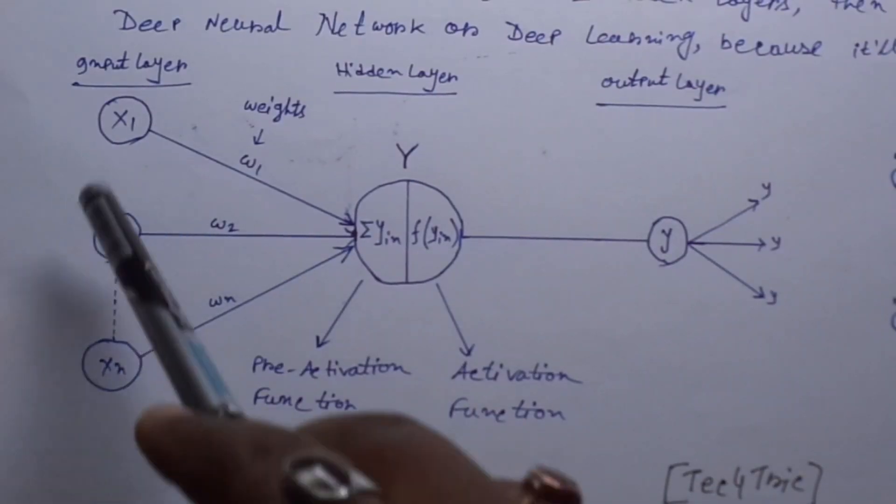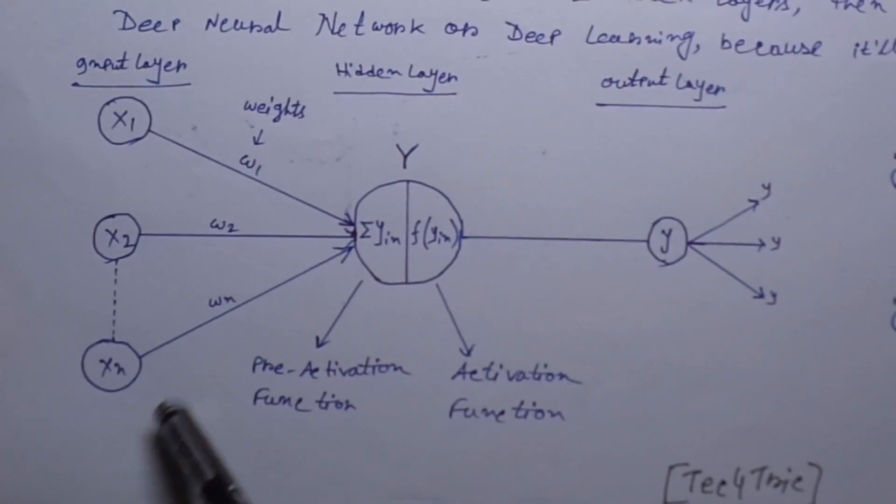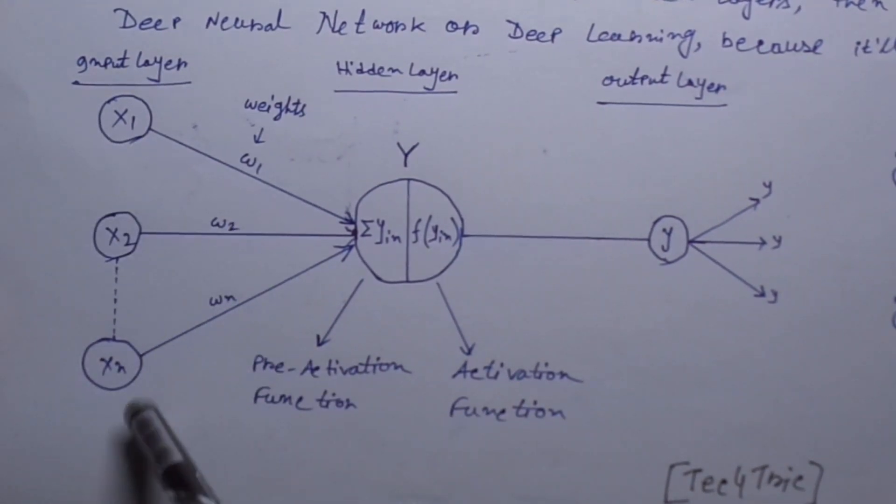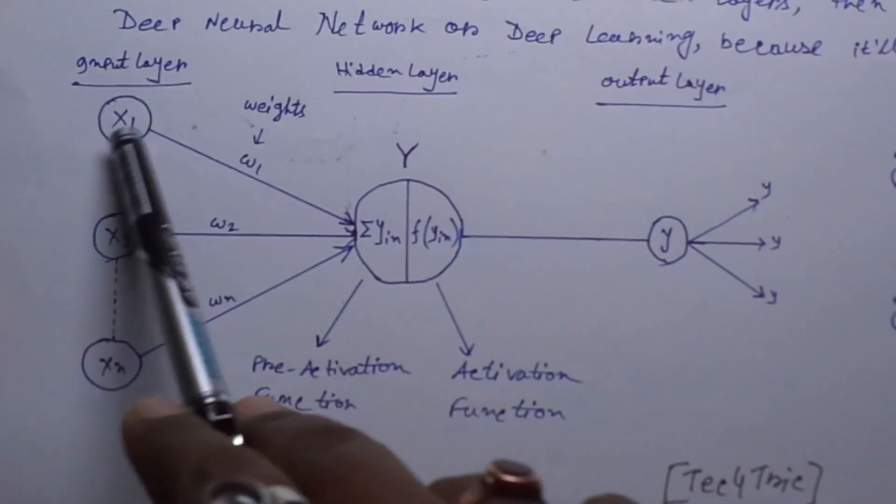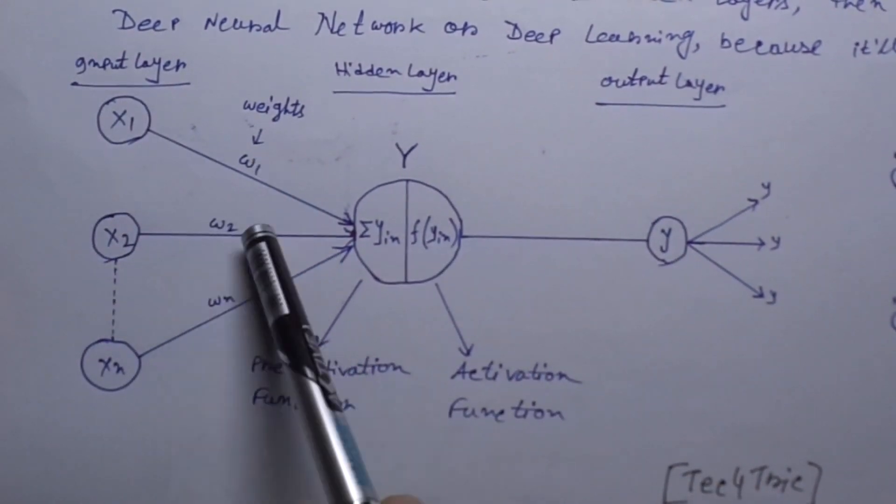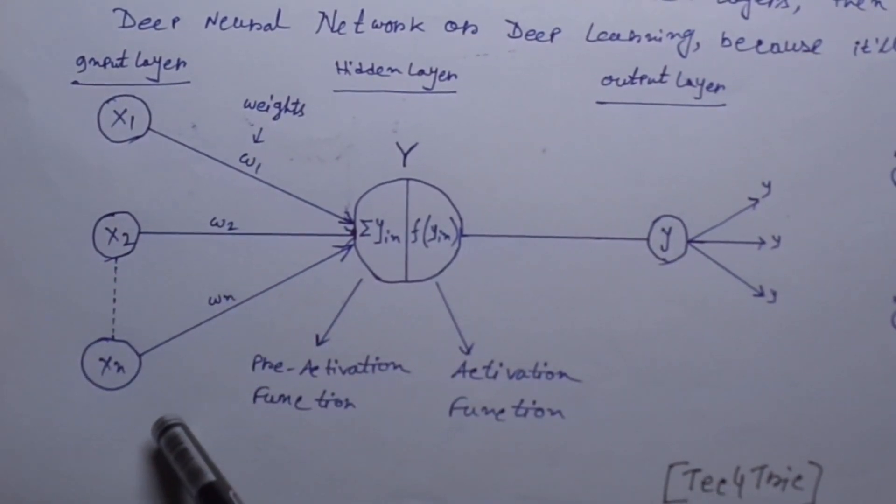So as you can see in the picture this one is the input layer. This one is the hidden layer and this is the output layer. In the input layer we have x1, x2 to xn and we have weights associated to the inputs that is w1, w2 and wn.